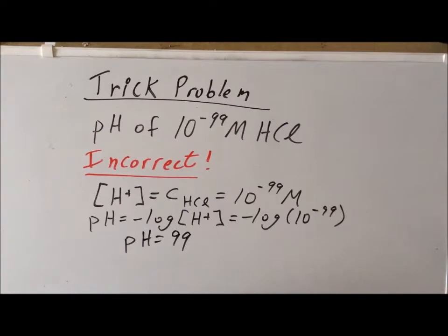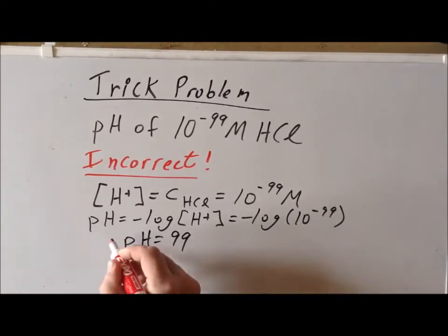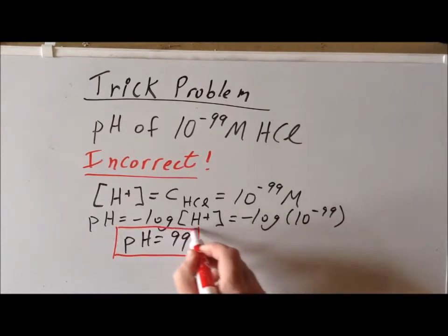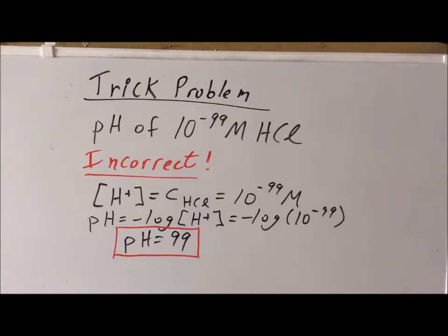This is incorrect, but this is the result that we would get by a naive application of the method that we've learned. How do we know that this is an incorrect result?